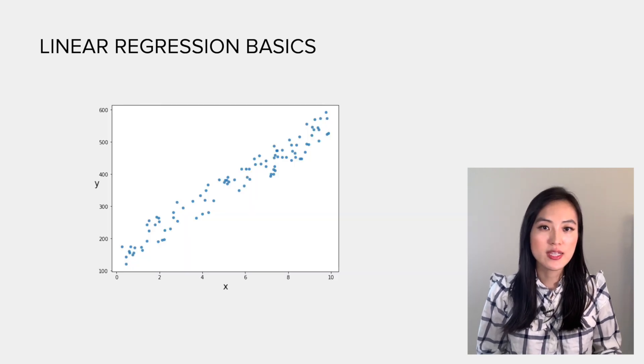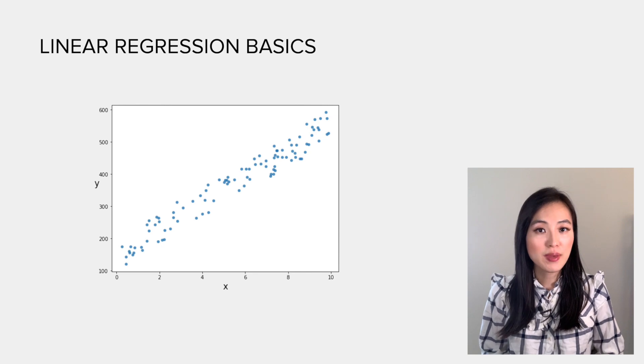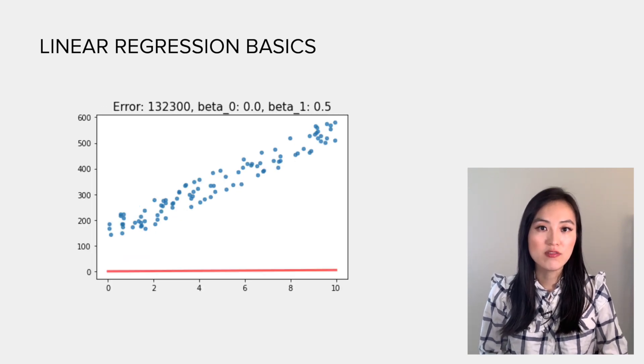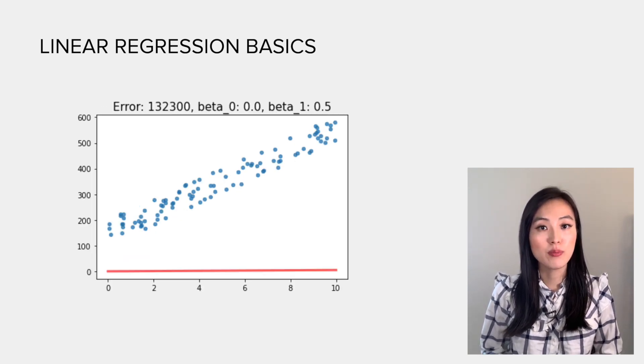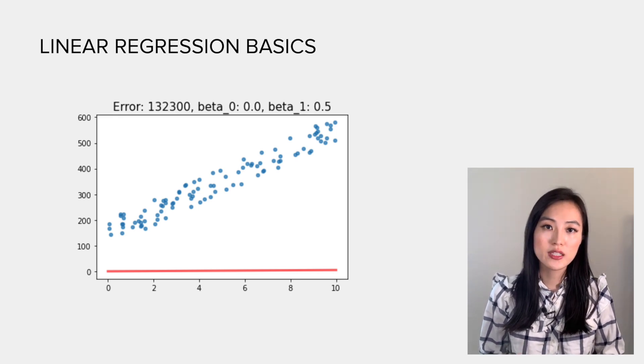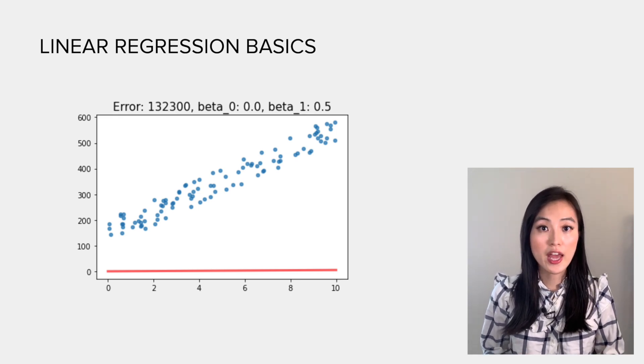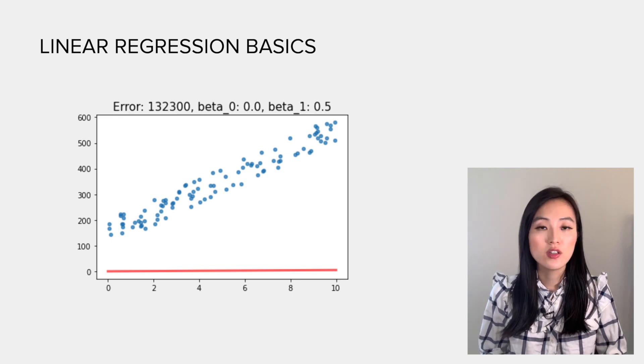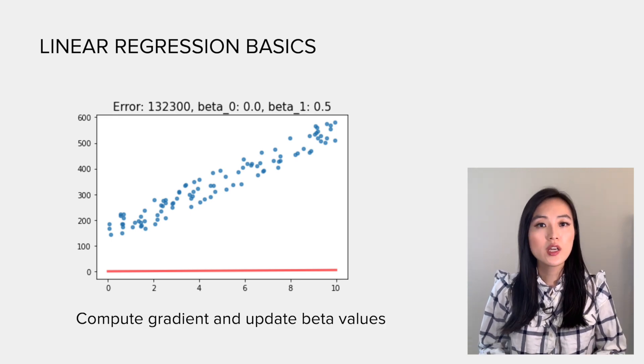We have some data points with x and y values. At the beginning, we take a random guess of betas and plot x and the predictive y using this red line. You can see that the line does not seem to reflect the relationship between x and y accurately, and we have a large error.